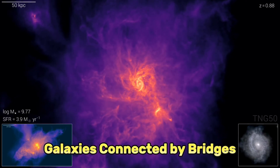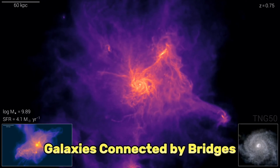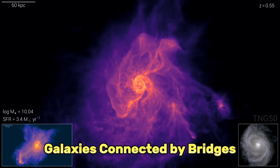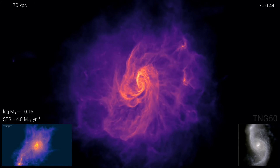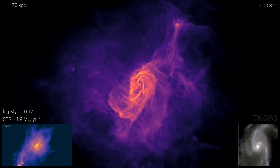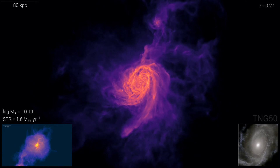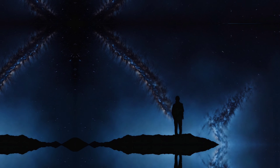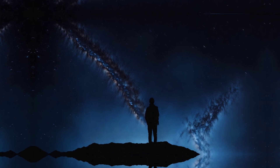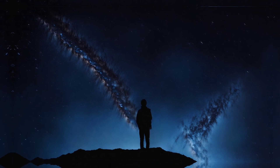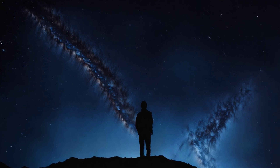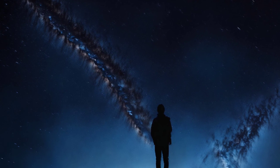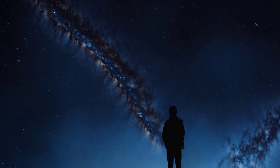This means that galaxies are not isolated islands in space, but rather connected by bridges or tendrils of gas and stars that extend along the filaments. These bridges or tendrils are not just passive conduits of matter — they are active agents of galaxy formation and evolution. They can transport gas and stars from one galaxy to another, or from the intergalactic medium to the galaxies, and can trigger star formation or quench it depending on conditions and feedback effects.